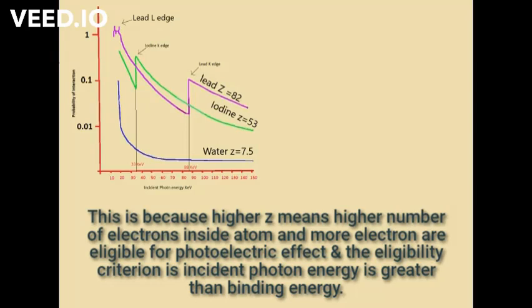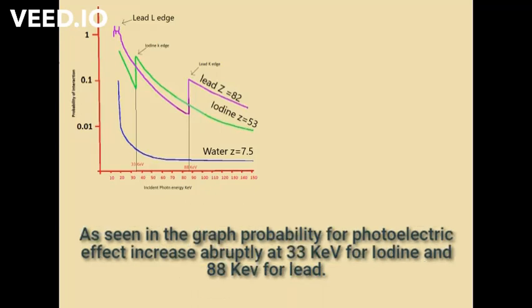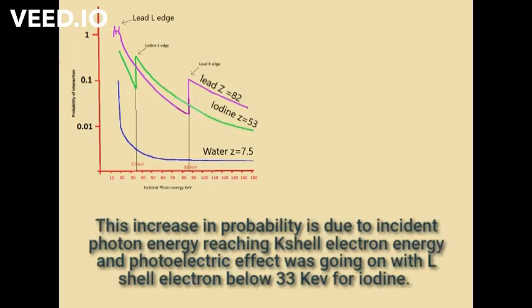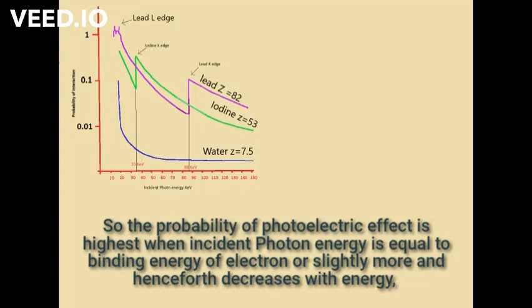The eligibility criterion is that the incident photon energy must be greater than the binding energy. As seen in the graph, the probability for the photoelectric effect increases abruptly at 33 keV for iodine and 88 keV for lead. This increase in probability is due to the incident photon energy reaching the K-shell electron binding energy; photoelectric effect was occurring with L-shell electrons below 33 keV for iodine. So the probability of the photoelectric effect is highest when incident photon energy equals the binding energy of the electron, or is slightly more, and decreases with increasing energy thereafter.